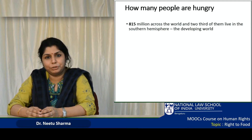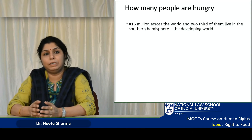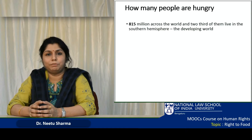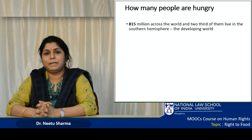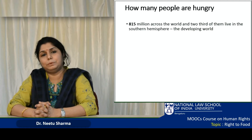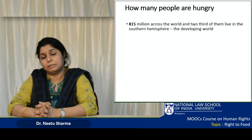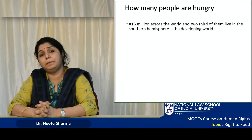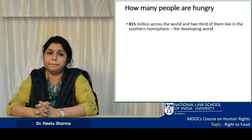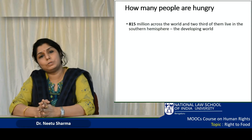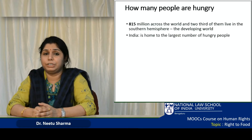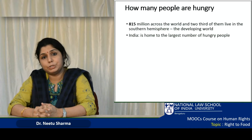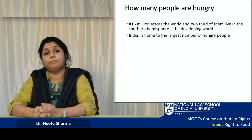This becomes even more complex when we see the rising number of people who die every day of hunger. Globally, as indicated by the International Food Policy Research Institute, there are some 815 million people who are food insecure across the world, and two-thirds of them live in developing countries. India, unfortunately, has the largest number of hungry people in the world and also the largest number in absolute terms of malnourished children. In India, 39% of children are stunted.